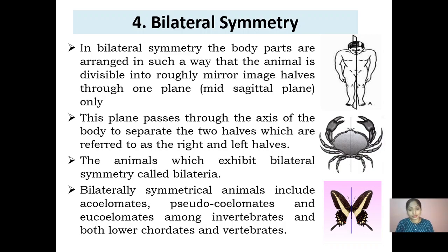Bilaterally symmetrical animals include acoelomates, pseudocoelomates, and eucoelomates among invertebrates, as well as both lower chordates and vertebrates and higher animals.